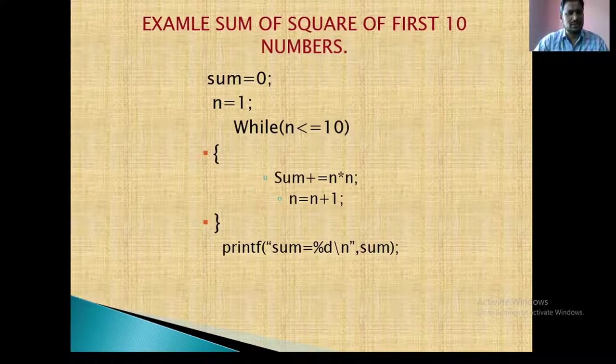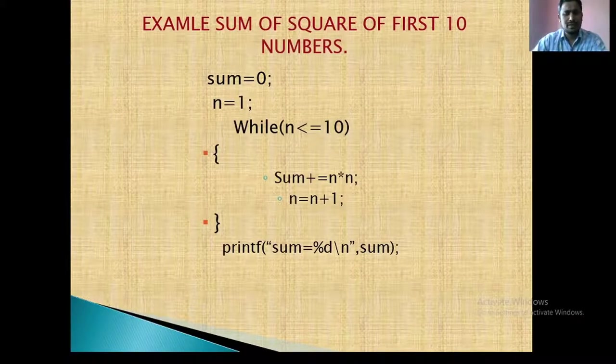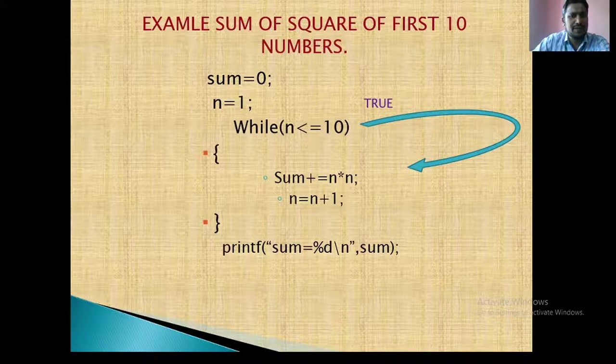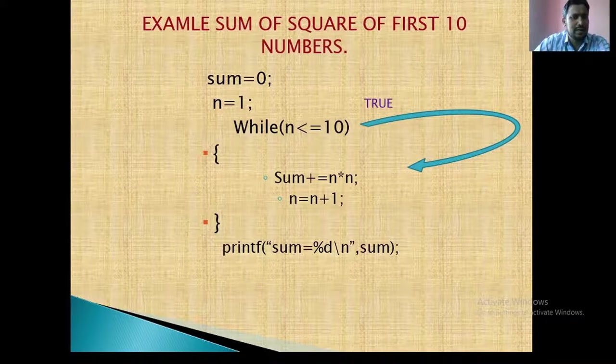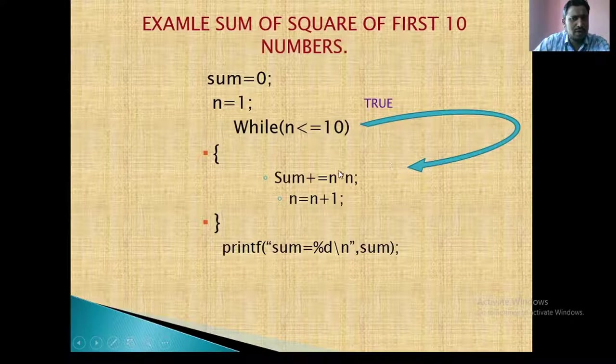So first time declare sum equal to 0 and n equal to 1. So if n equal to 1, n equal to 1 means 1 is less than or equal to 10. 1 less than or equal to 10 is true. Then control is transferred to sum plus equal to n star n.